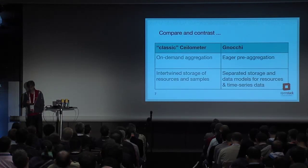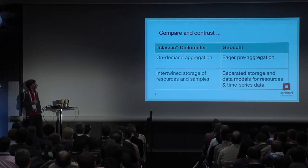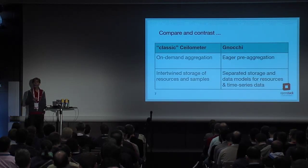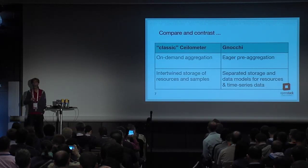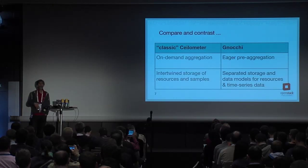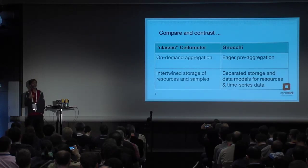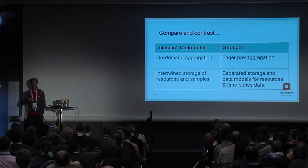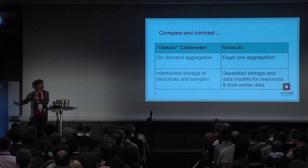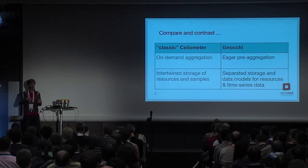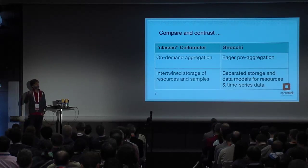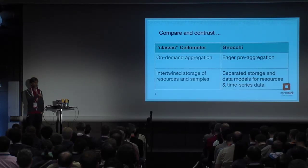Let's look at another axis of comparison between classic Ceilometer and Gnocchi — the timing of aggregation. In classic Ceilometer, it's all done on demand. If you query the Ceilometer API and say the period you're interested in is hourly, in the back end we do a big MapReduce in Mongo, stick the data into buckets based on the granularity you chose, and compute the average for each hour. If you emit exactly the same query five minutes later, we'll do that work again, because it's all done on demand.